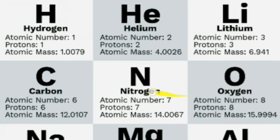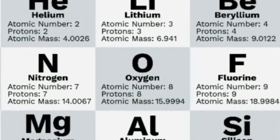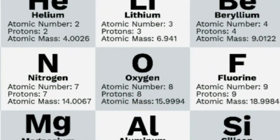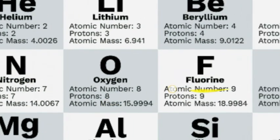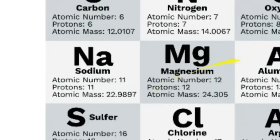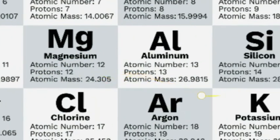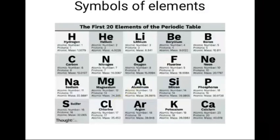The elements include carbon, nitrogen, oxygen, fluorine, neon, sodium, magnesium, aluminum, silicon, phosphorus, sulfur, chlorine, argon, potassium, and calcium. Calcium is the 20th element of the periodic table. So the first element is hydrogen and the 20th element is calcium. You have to learn all the names along with their symbols.